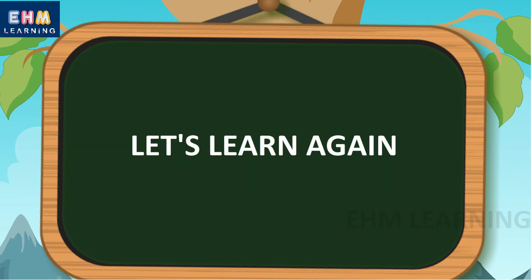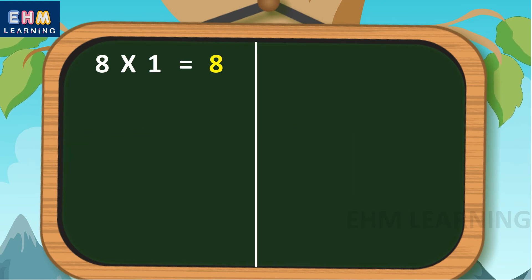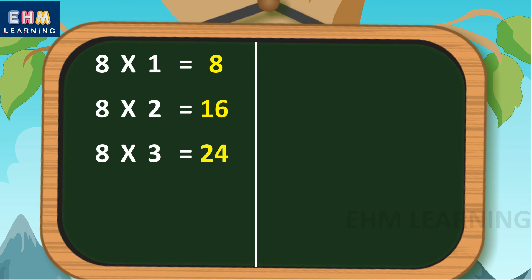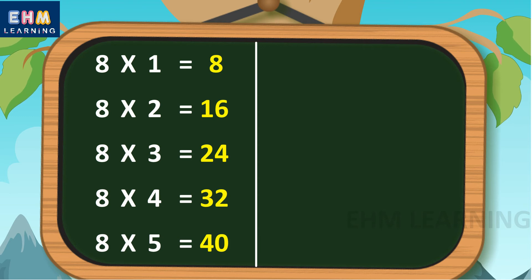Let's learn again. 8 1's are 8, 8 2's are 16, 8 3's are 24, 8 4's are 32, 8 5's are 40.